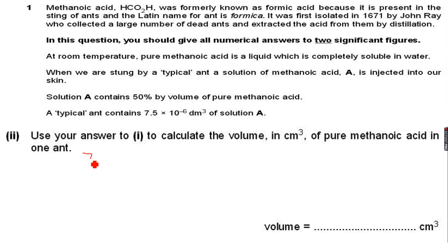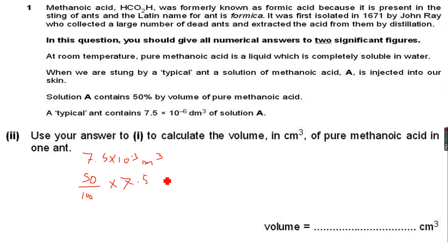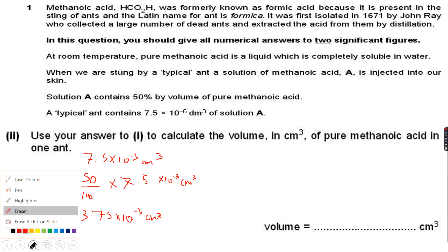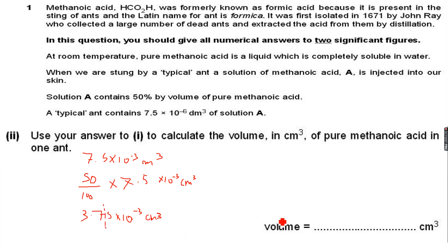Using the answer from part 1, which was 7.5×10⁻³ cm³, we calculate the volume in cm³ of pure metanoic acid in one ant. The volume of pure metanoic acid is 50 percent of solution A, so: 50/100 × 7.5×10⁻³ cm³ = 3.75×10⁻³ cm³. Rounding to two significant figures, this becomes 3.8×10⁻³ cm³.